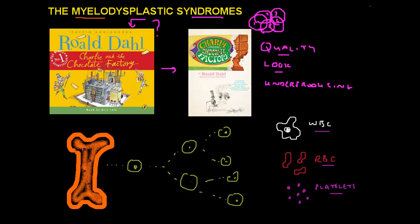Now let's go back to the example of the abnormal chocolate bar. These cells are released from the bone marrow into the blood — they've left the factory. If you look inside the blood and see a problem — either too few white blood cells, red blood cells, or platelets — or they look strange and don't look normal, like the chocolate bar that looked funny, or they may have a problem with their function — all of these things: problems with the number of cells, function of the cells, or the look of the cells, may indicate that something is wrong in the bone marrow.